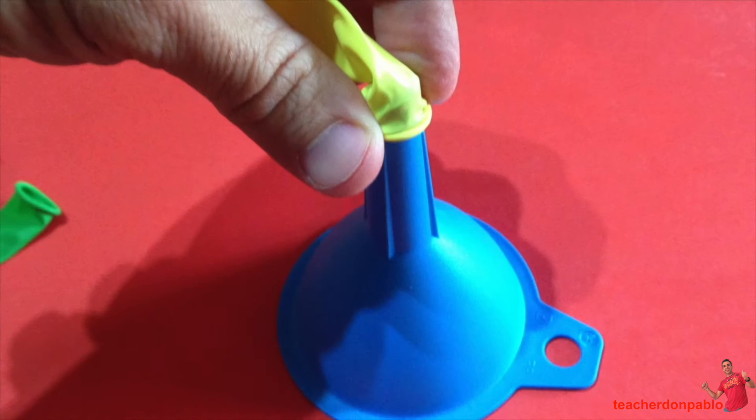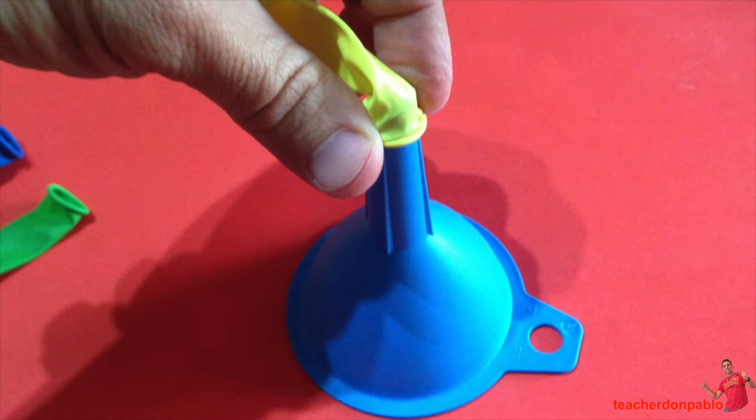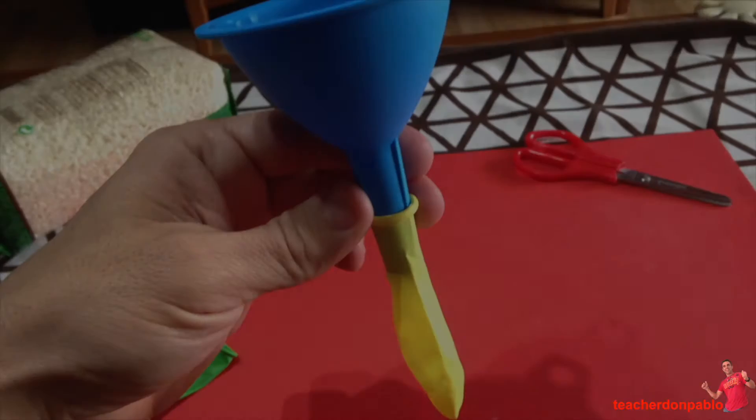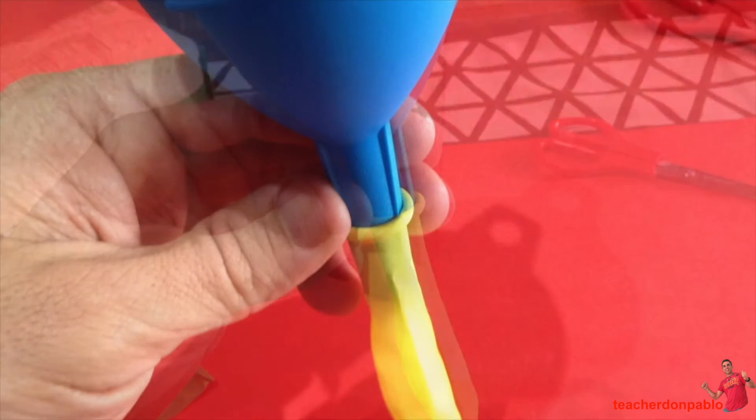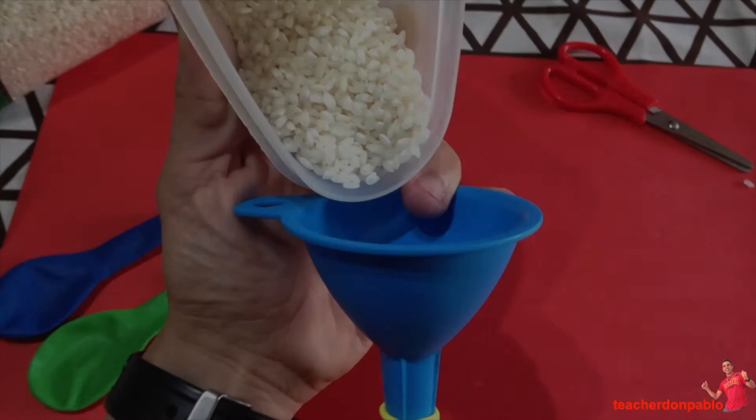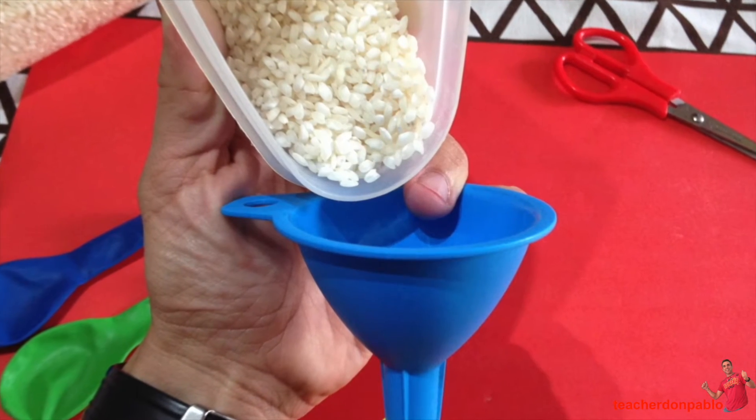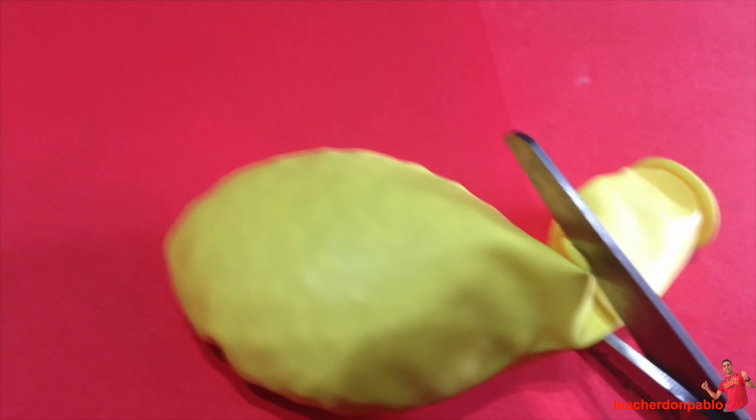Okay, first of all we put the funnel into the balloon, we put a little rice into the balloon, we cut the top of the balloons.